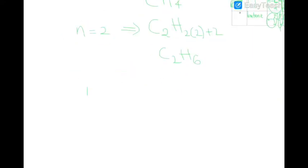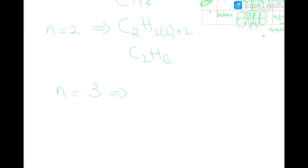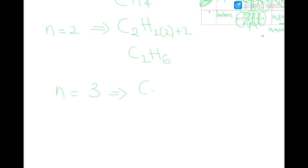Third member. Using this general formula, you can find any member. So C3, H2 times 3 plus 2. So that gives you C3H8.